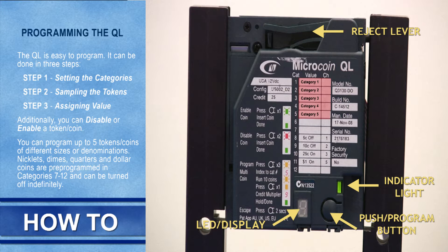You don't have to program nickels, dimes, quarters, or dollar coins because they have been pre-programmed on lines 7 through 12 and can be turned on or off indefinitely. You can program your QL in three easy steps. In this lesson you will learn how to set your categories, sample your tokens, and assign a value to those tokens.